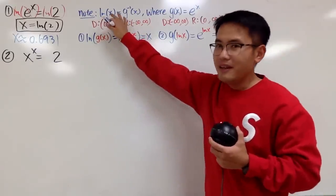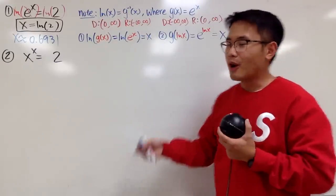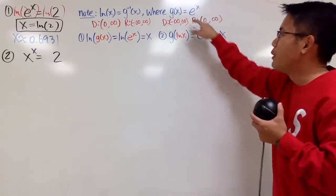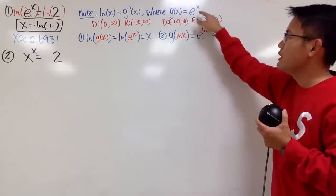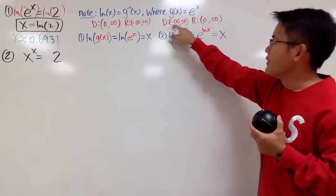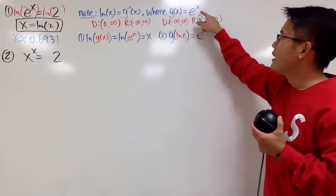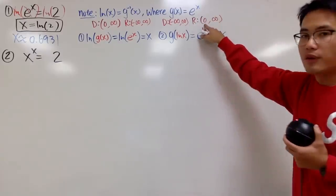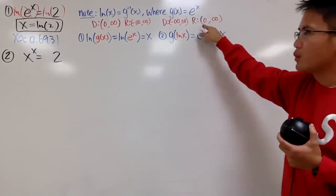And usually, the inverse function might be hard to do, so you want to attack the original function. Suppose you do have this as your original function, e to the x. You can figure out the domain, and it is going to be negative infinity to positive infinity, and then the range of e to the x is from 0 to infinity, not including the 0.